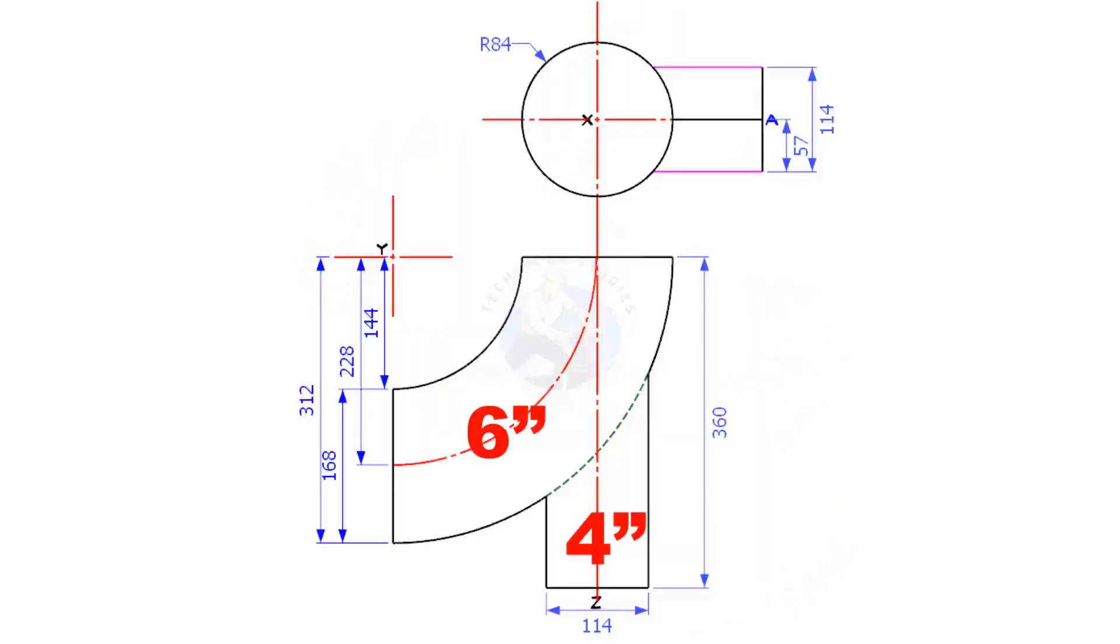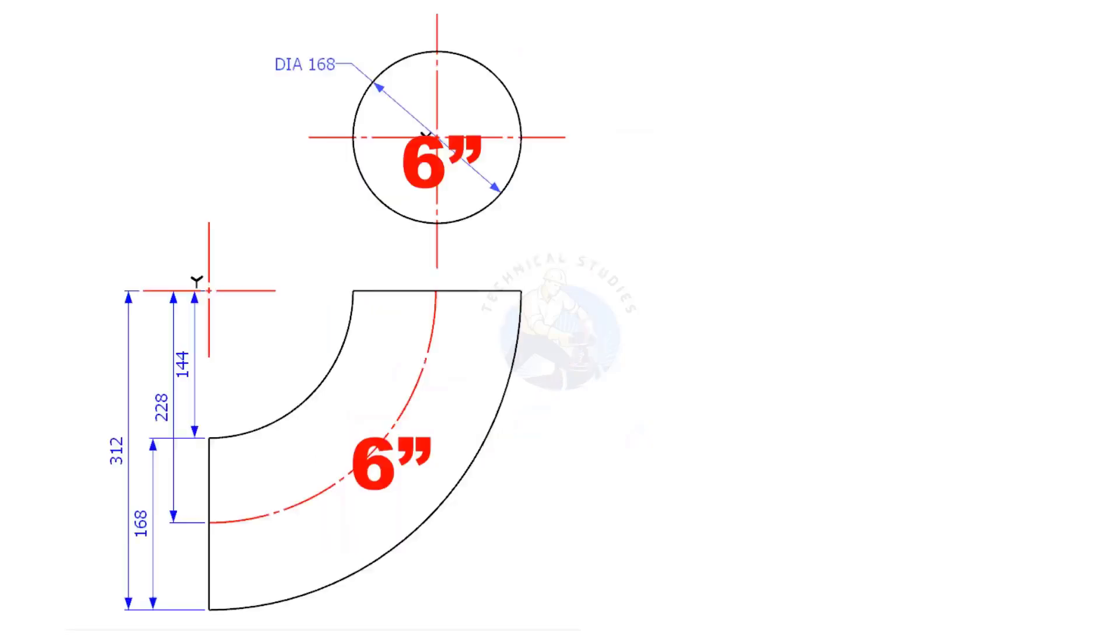Let us assume the pipe size is 6 inches and the support size is 4 inches. Lay out the elbow and its side view as shown. Since this is a long radius elbow, the centre radius is 6 multiplied by 1.5. The elbow centre is 9 inches.